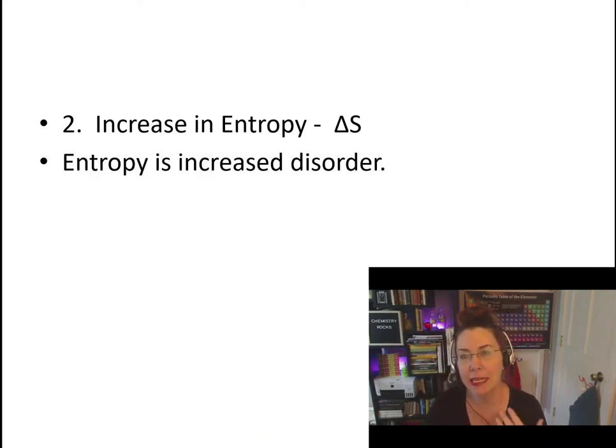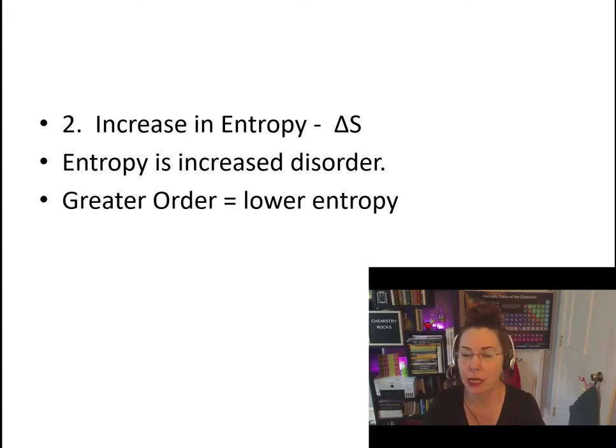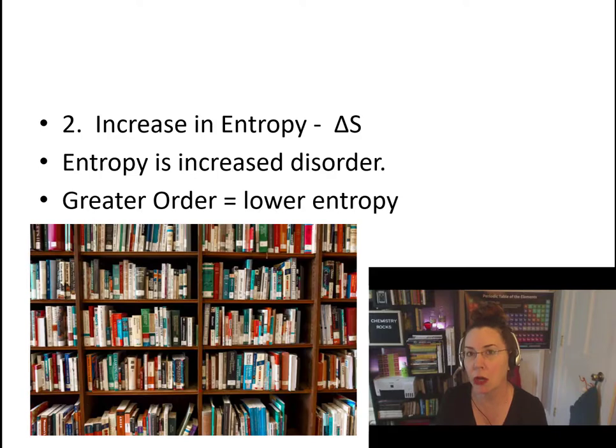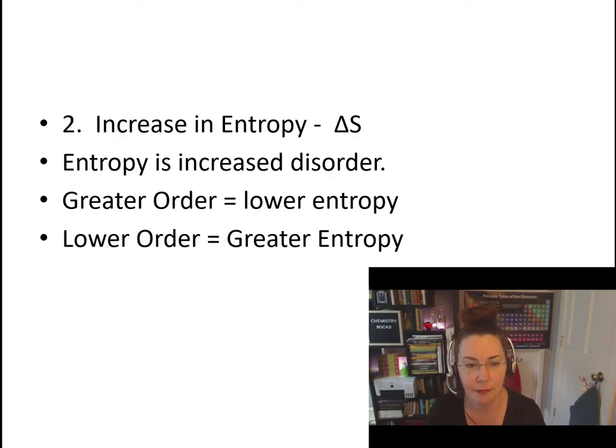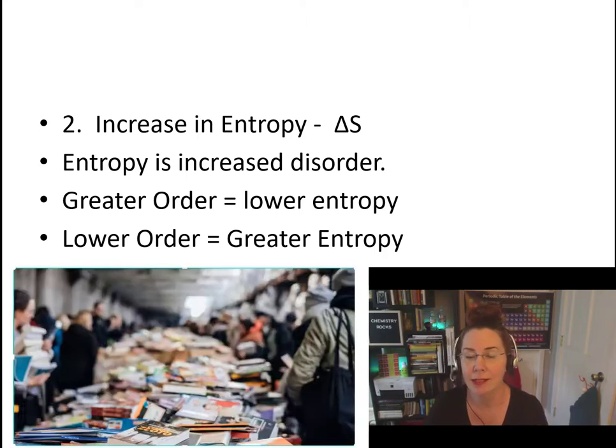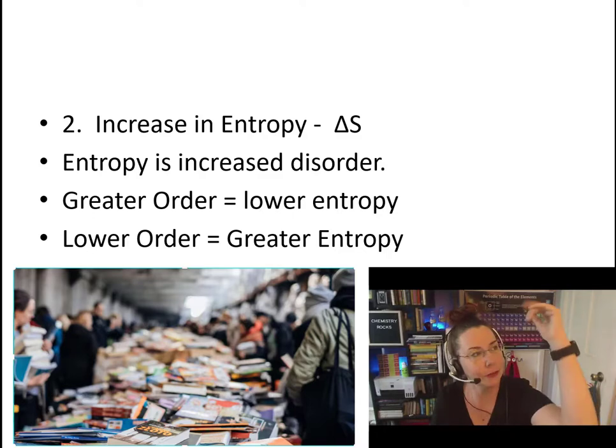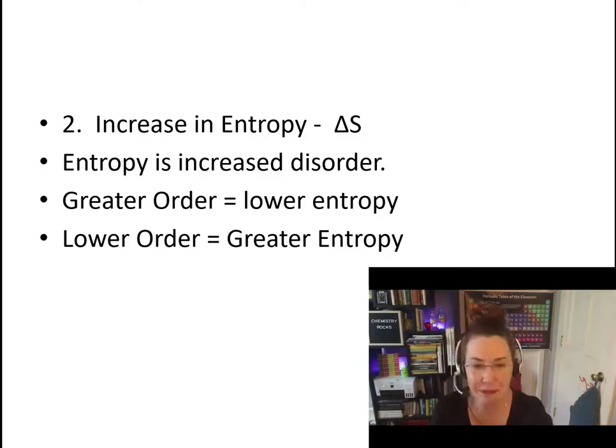Entropy is an increase in disorder. The greater the order, on the other hand, the lower the entropy. Something that's a very orderly system would have very low entropy. And we're going to talk about different things that can affect that. Lower order would be greater entropy or greater chaos. So the greater the order, the lower the entropy. The lower the order, the greater the entropy. That's the way it works.